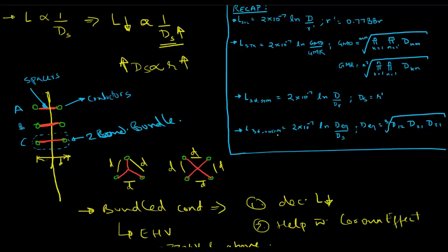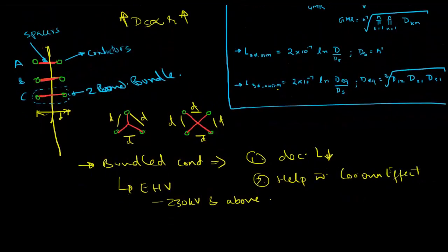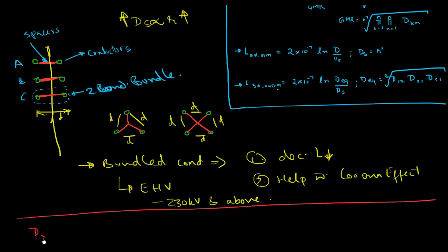So I'm going to use this formulation for GMR. For a two-bundle conductor, I'm going to keep this formulation here for you to see. So if you imagine this two-bundle conductor, what will the ds be? So we'll say ds, and we will add a superscript of 2b to say it's a two-bundle. And if you use this formulation, what's n here? n is 2, 1 and 2, right? So then d of kn, so that'll be d of 12, d of 11, d of 12, d of 21, and then d of 22, and this to the root of 2 square, so that's 4.